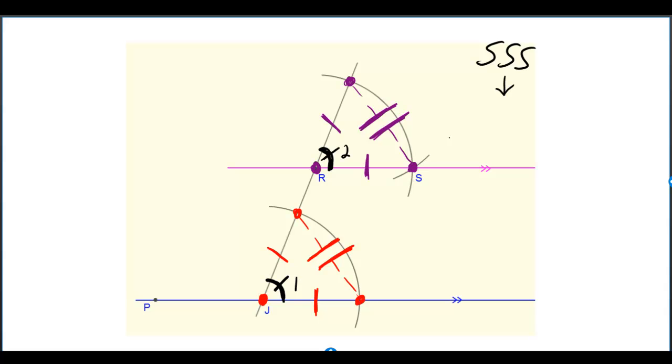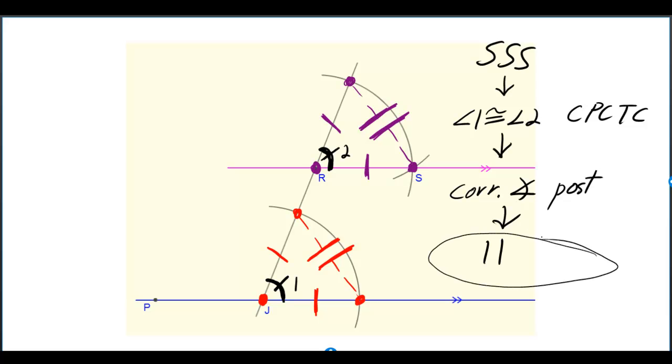So if I label them angle one and angle two, then angle one is congruent to angle two by CPCTC. But angle one and angle two are corresponding angles. And when corresponding angles are equal, then according to the corresponding angle postulate, you have parallel lines. So we proved that they are parallel.